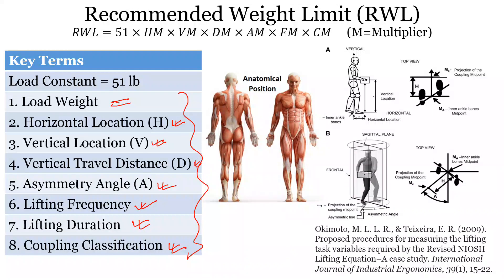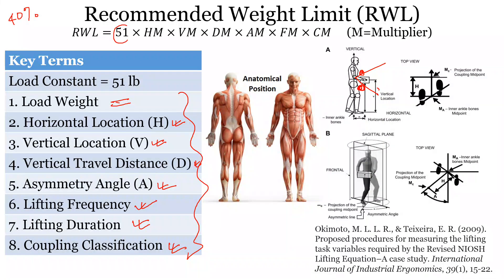These are the eight factors that affect lifting ability. The equation was developed based on 40th percentile female strength. In an ideal lifting condition — lifting very close to the body from about knuckle height to shoulder height — that person can lift 51 pounds. So a 40th percentile female in an ideal posture can lift 51 pounds.